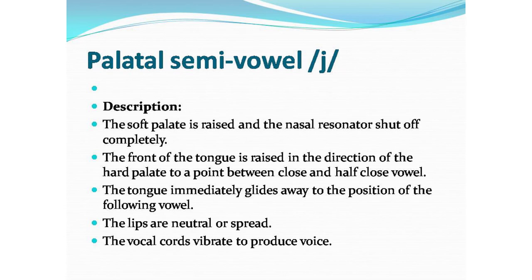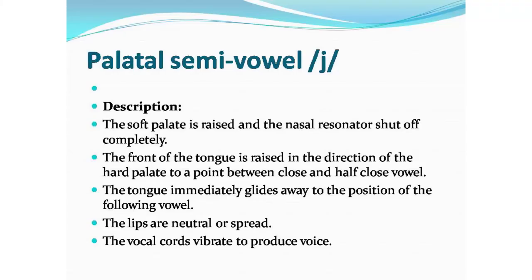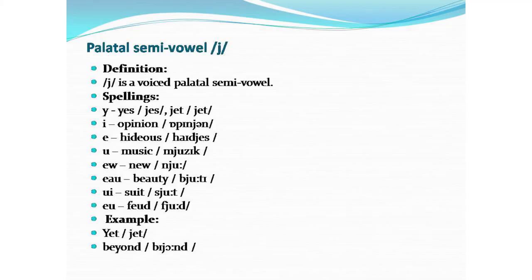Now let's see semi-vowels. The first is /j/ — palatal semi-vowel. The soft palate is raised and the nasal resonator shuts up. The front of the tongue is raised in the direction of the hard palate to a point between close and half-close vowel. The tongue immediately glides away to the position of the following vowel. The lips are neutral or spread. The vocal cords vibrate to produce voice. /j/ is a voiced palatal semi-vowel. Spellings: Y in yes, I in opinion.